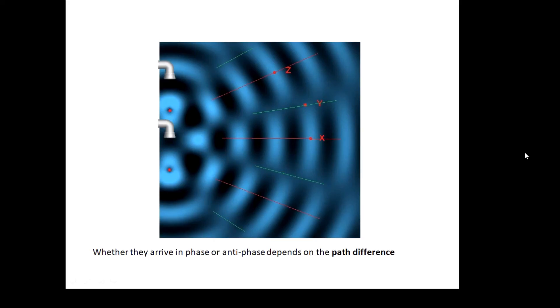At some points waves add together constructively, and at some points we get destructive interference and they cancel each other out. Whether they arrive in phase or anti-phase depends on something called the path difference — the difference in how far they have traveled. At point X, waves arriving anywhere on that red line have traveled the same distance, so they arrive in phase and we get constructive interference anywhere along that line.